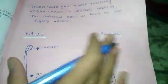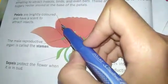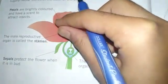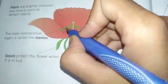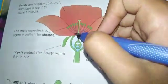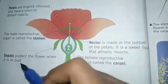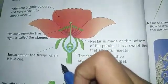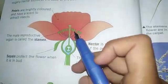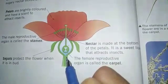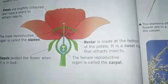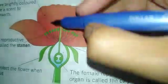Looking at this diagram from the book: the petals are bright colors to attract insects. The male reproductive organs are called stamens. The sepals protect the flower when it is in bud. This is the nectar which insects and animals come to feed on, and pollen grains travel from the anther across to the stigma.